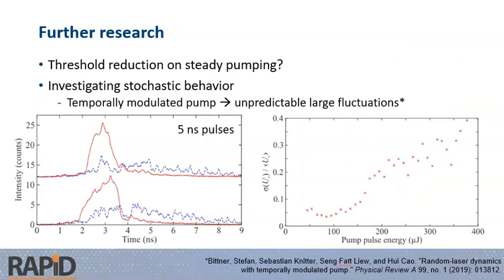Going further, we still need to look at why the threshold reduction occurs when you have larger spheres—you would expect it to probably be something smaller. We should also investigate the stochastic behavior with temporally modulated pumps using this model. There are these unpredictable, very large fluctuations that have been observed when the pump is temporally modulated, even though the average pump power does not change from pulse to pulse. This may be the explanation for why these fluctuations are sometimes seen in random lasers that are optically pumped with long pulses.